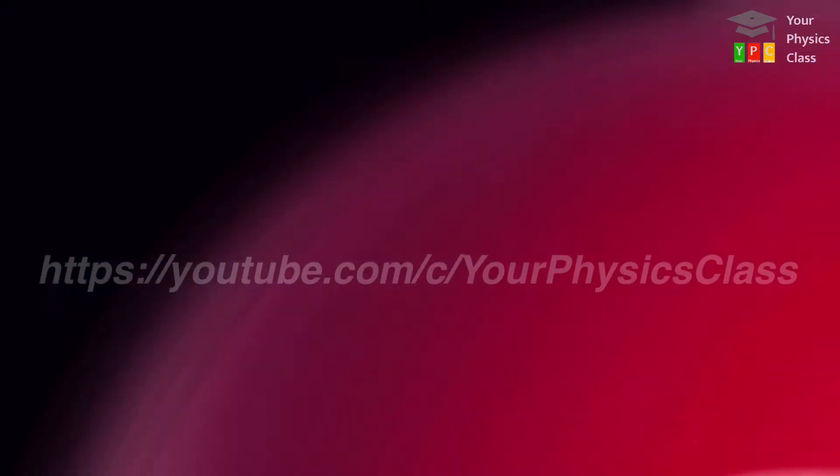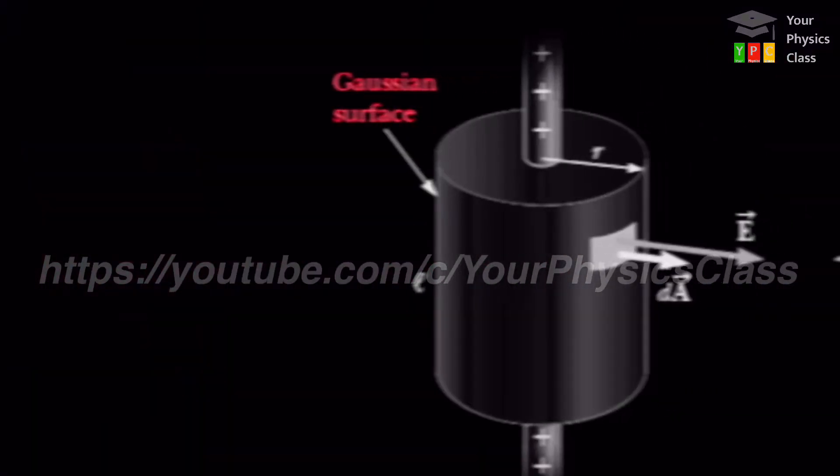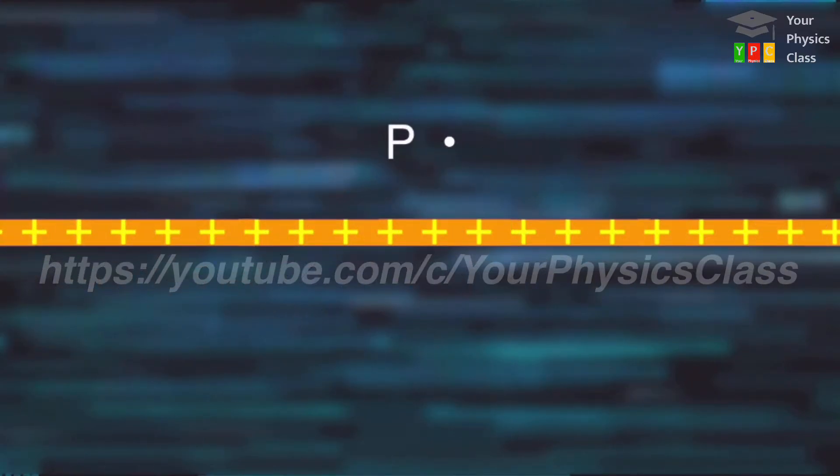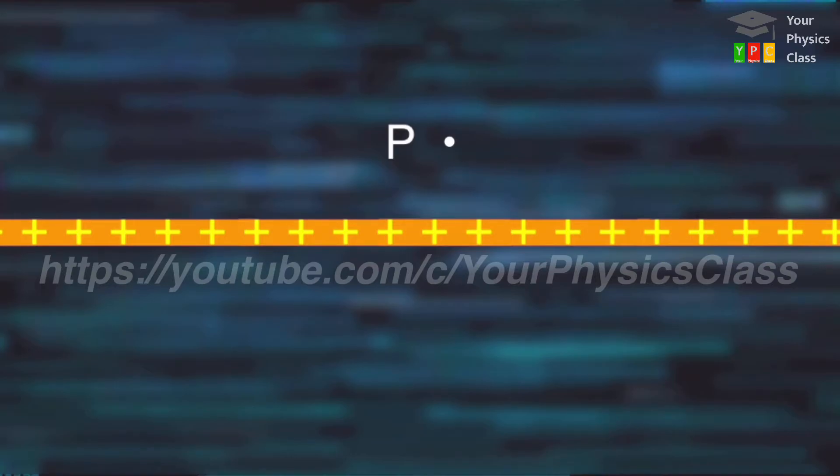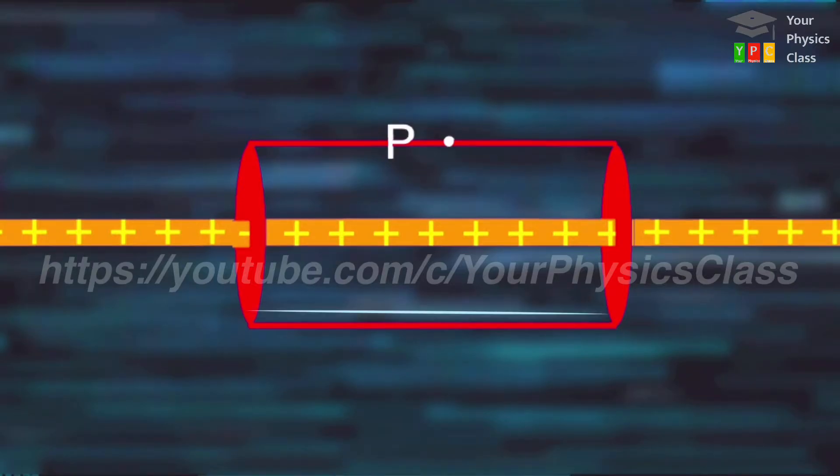Gauss law ke istemal ke liye gaussian surface draw karna hoga. Aur yaad rahe, yeh surface humare assumed point P se pass hona chahiye. Aur usne charges ko bhi enclosed karna chahiye. Par puri conductor ko hume enclose nahi kar sakte kyunki length of conductor unknown hai. So, hum definite length ka ek coaxial cylinder draw karenge. Is cylinder ka length L hai, aur radius equal to distance between conductor and point P hai, that is small r.